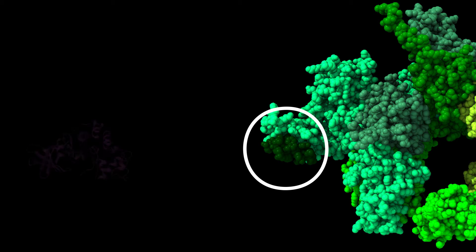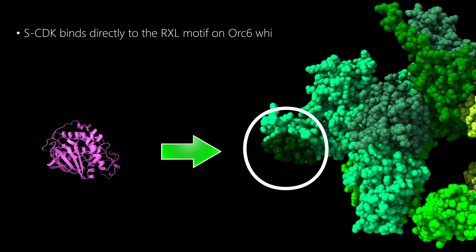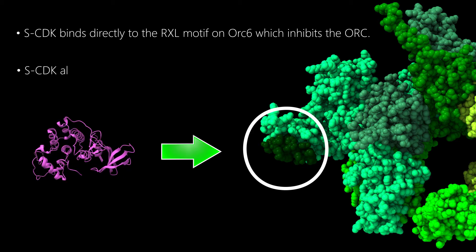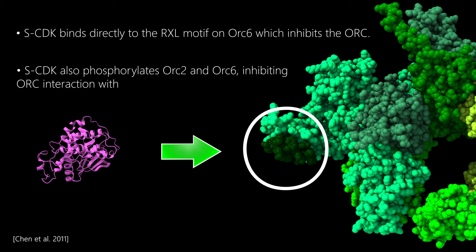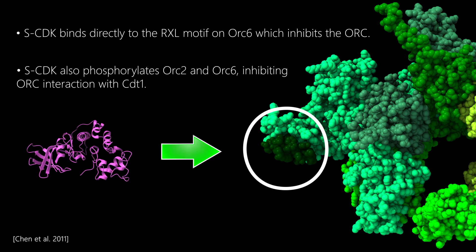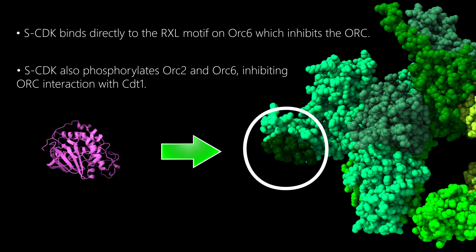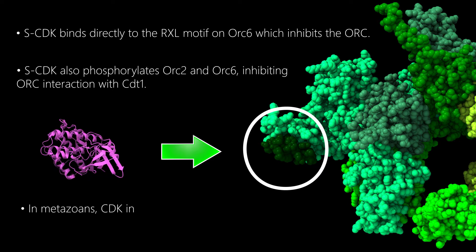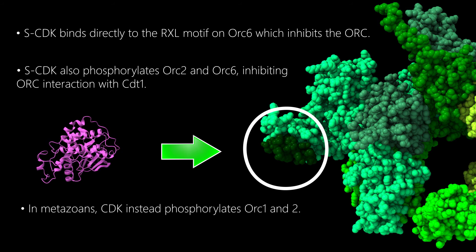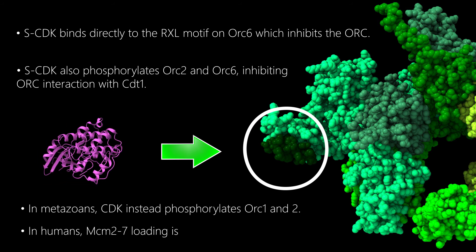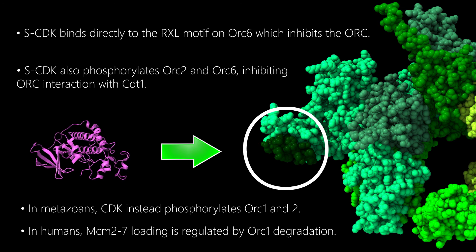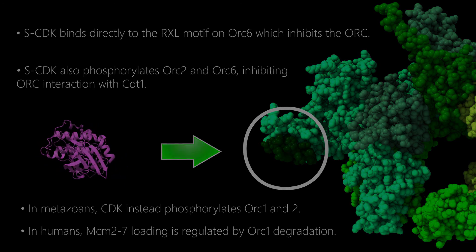SCDK binds directly to the RXL motif of ORC6, which inhibits the ORC. SCDK also phosphorylates ORC2 and ORC6, inhibiting ORC interaction with CDT1. In metazoans, CDK instead phosphorylates ORC1 and ORC2. In humans, MCM loading activity is regulated by the degradation of ORC1 during S phase.